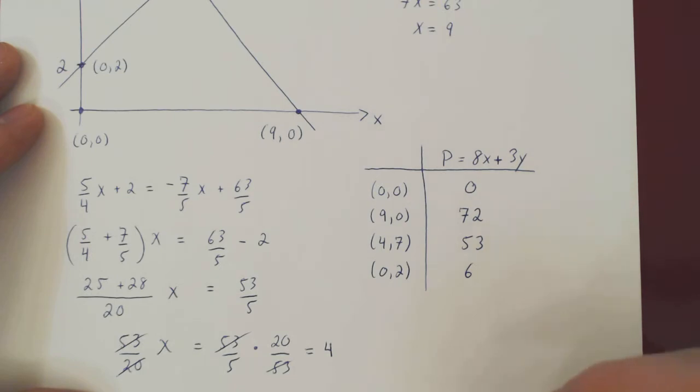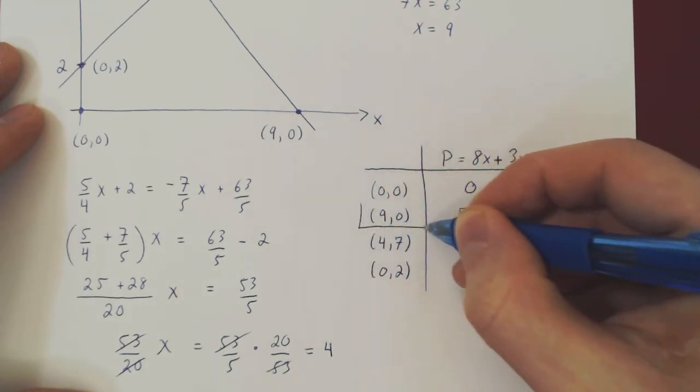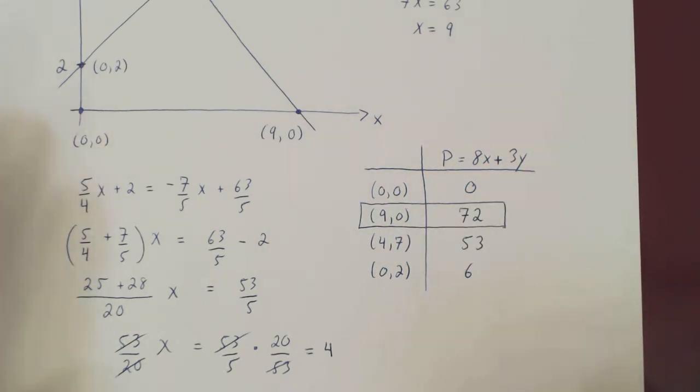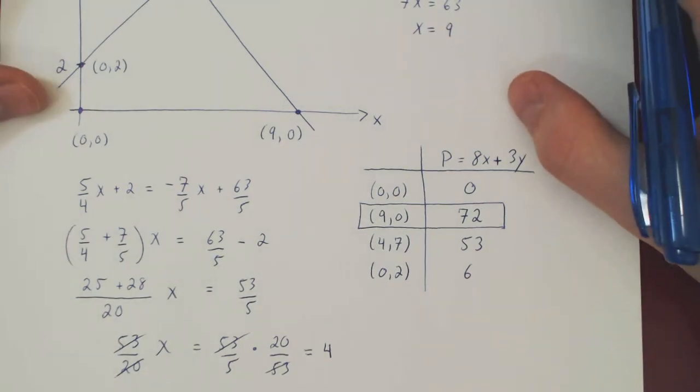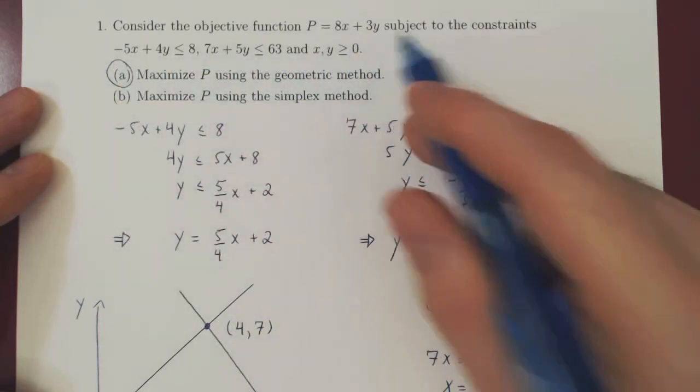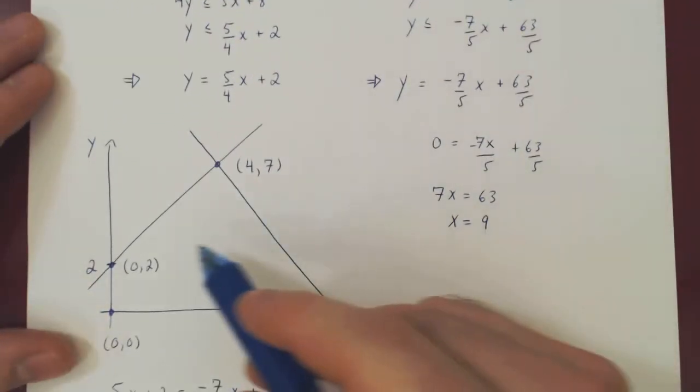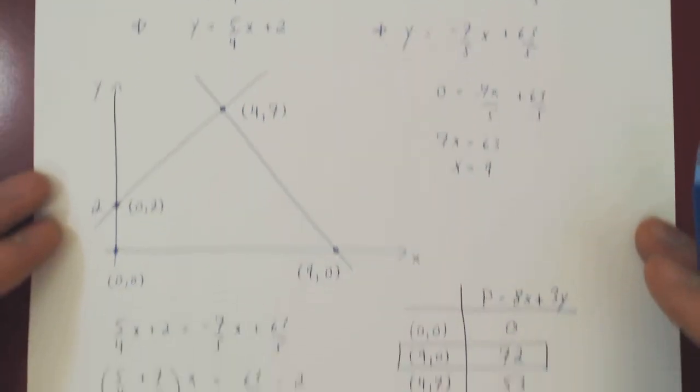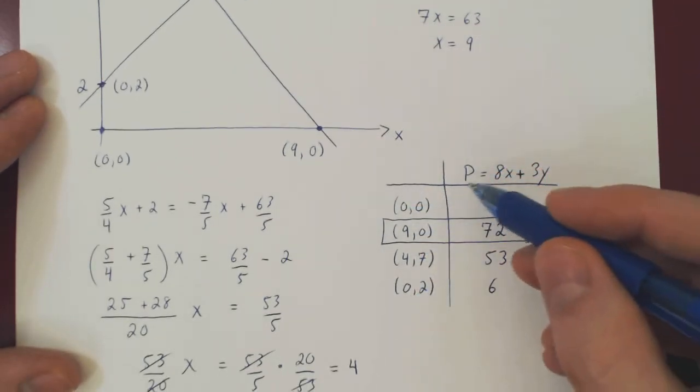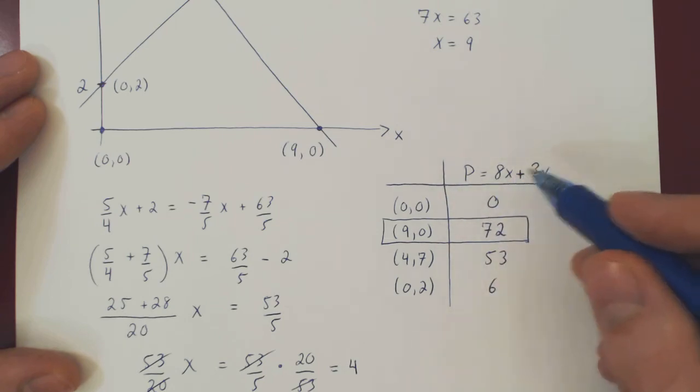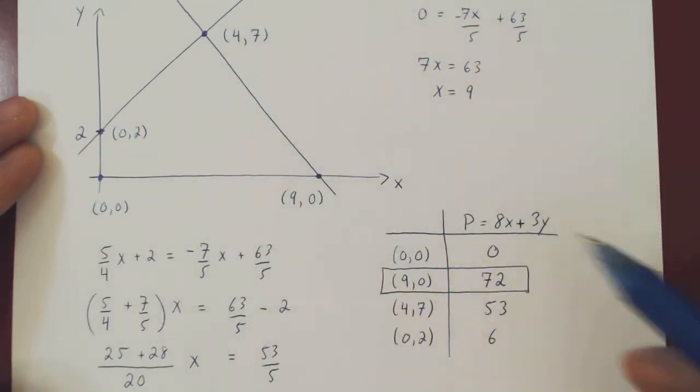And so the maximum value of P is pretty obvious, it is 72, and it is reached when x equals 9 and y equals 0. And that's it. So again, these constraints define the following feasible region. The maximum must occur at one of the vertices, so once we have every vertex we evaluate the objective function at each vertex, and the larger value in our table is the maximum possible value that P can attain inside of our feasible region.